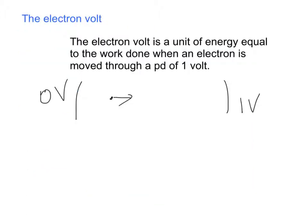At this point it's worth mentioning the electron volt. The electron volt is a unit of energy equal to the work done when an electron is moved through a potential difference of 1 volt. We use the electron volt instead of joules because the number in joules would be very small, since the charge on the electron is very small. When looking at ionisation and excitation, we use the electron volt, stated with a small e and a large V. For example, an electron moved through a potential difference of 1,000 volts has 1,000 electron volts of work done on it.